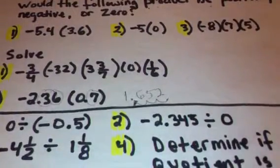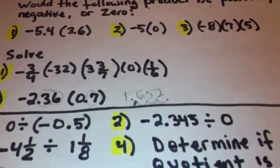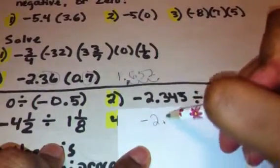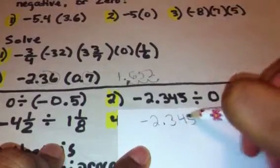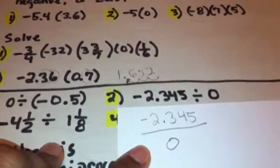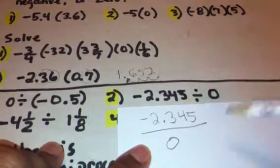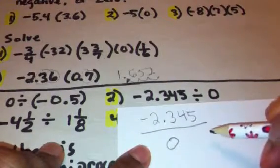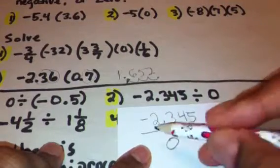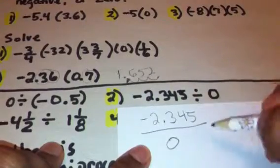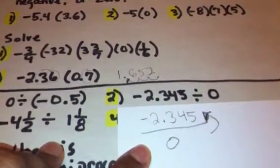Okay. Our second one is negative 2.345 divided by zero. So now our zero is going to be at the bottom, isn't it? So we have negative 2.345 divided by zero. And this is division, so we have the division rules for zero, which is simply, when it's at the bottom, you're going to have an undefined answer because zero times, well, we don't know, would be negative 2.345. You can't multiply anything times zero and end up with this number. So our answer is undefined.